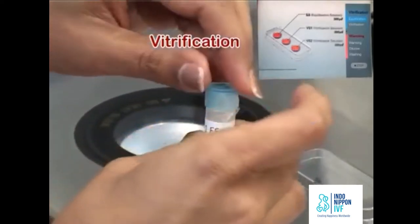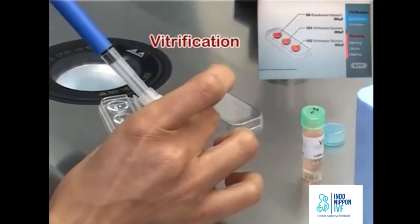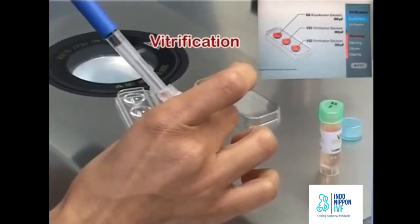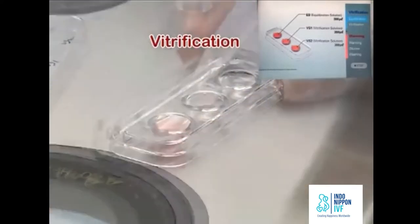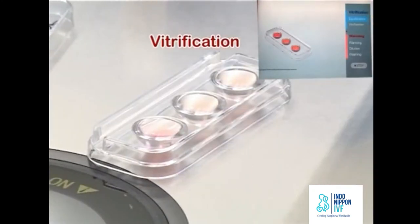Fill the wells of the vitriplate with 300 microliters of ES, VS1 and VS2 respectively. Put the lid back on the vitriplate immediately.